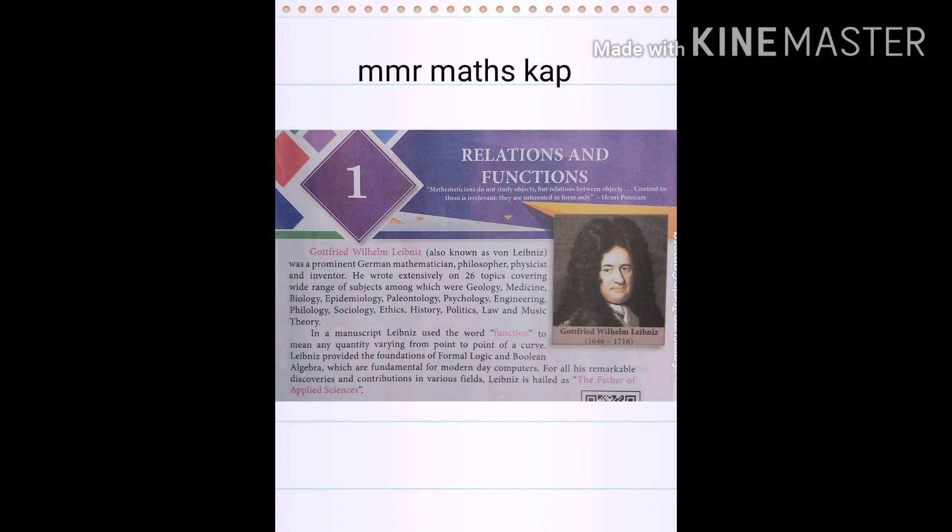This is the first chapter. It deals with linking pairs of elements from two sets and the relationship introduced between the two elements in the pair.